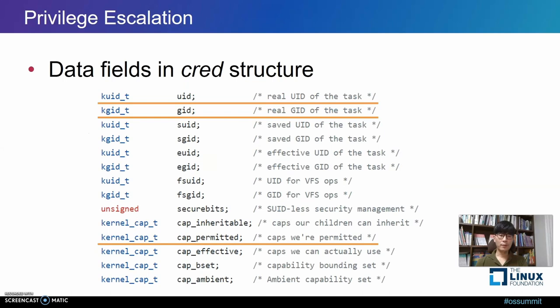Here we briefly describe how exploit codes for Linux systems, including container environments, perform privilege escalation. They involve the process's credential structure and two main kernel functions. There are prerequisites including hacking methods to bypass protection mechanisms such as SMEP, SMAP, or KASLR.